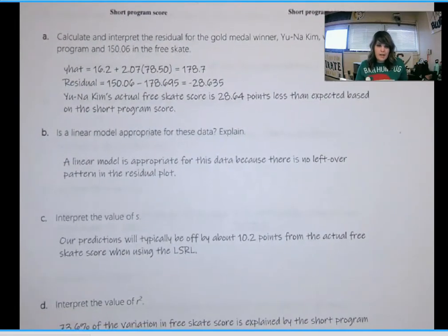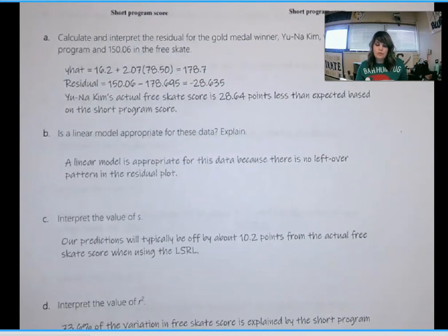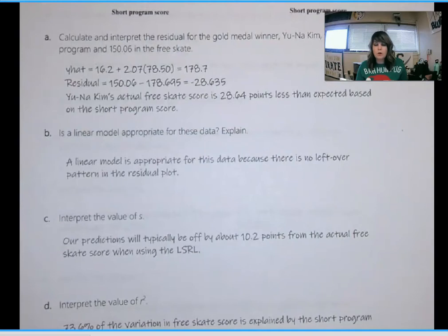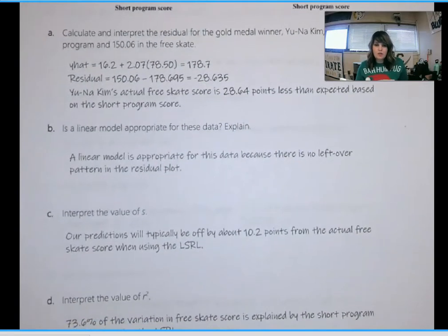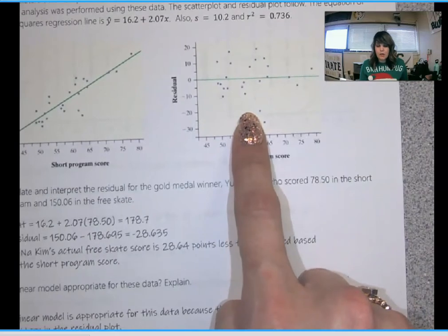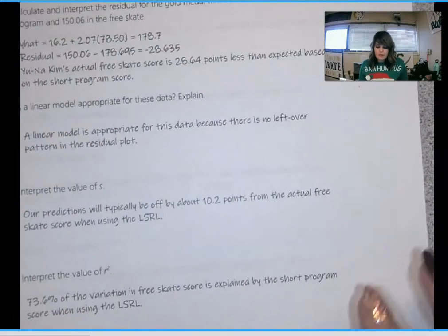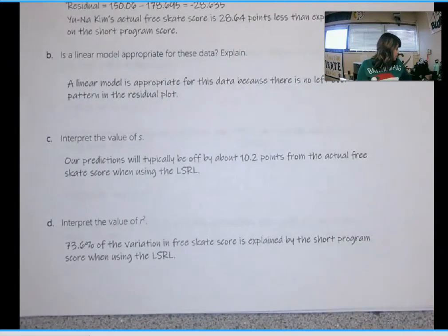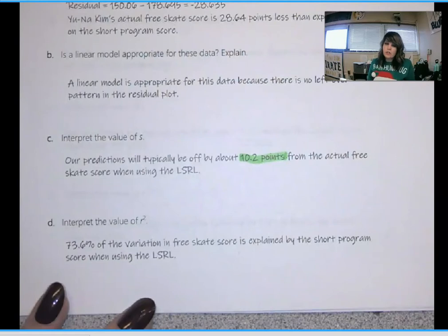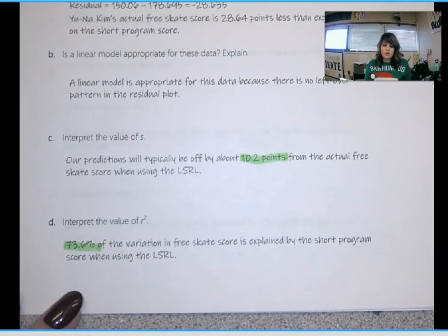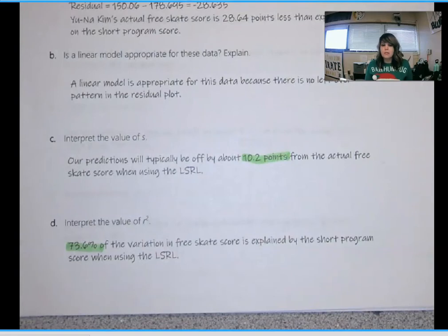For A, I have that Yuna Kim's actual free skate score is 28.64 points less than expected based on the short program score. For B, I have that a linear model is appropriate because they gave us the residual plot and there's no leftover pattern. Then for C and D, I followed my phrases to memorize very closely. The one thing I want to highlight is make sure that on S, you have units—your 10.2 points from the actual free skate score. And on D, your R squared is written as a percent. It always must be written as a percent.